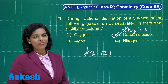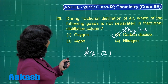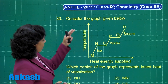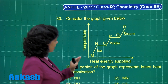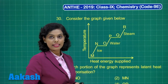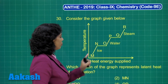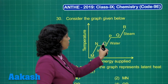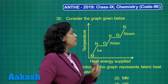After this, the last question of the chemistry section — question number 30. Consider the graph given below. Here we have temperature on the y-axis and heat energy supplied on the x-axis. Between points M and N, we have ice. Between O and P, we have water. And between Q and R, we have steam.